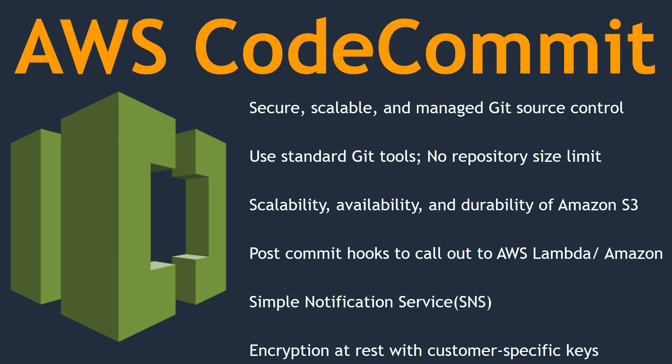For example, somebody commits new code and you want to trigger a build or send a notification to somebody for validating a quality check on the code itself. You can write an Amazon Lambda function or use Simple Notification Service to trigger downstream actions.